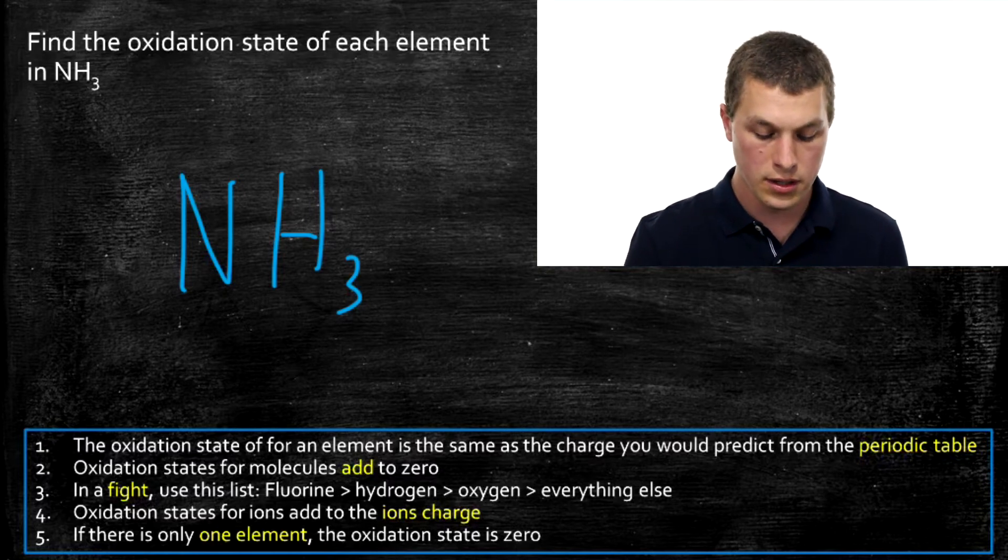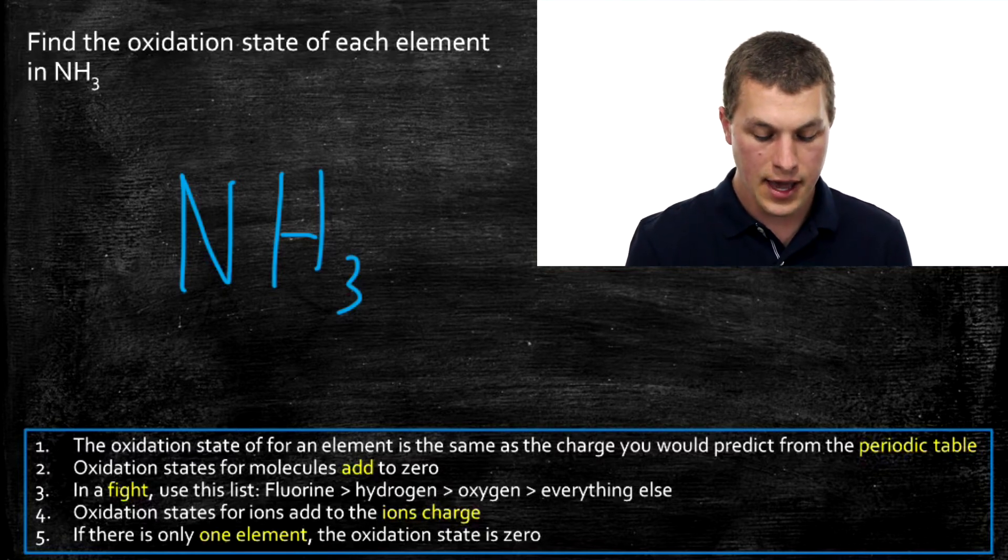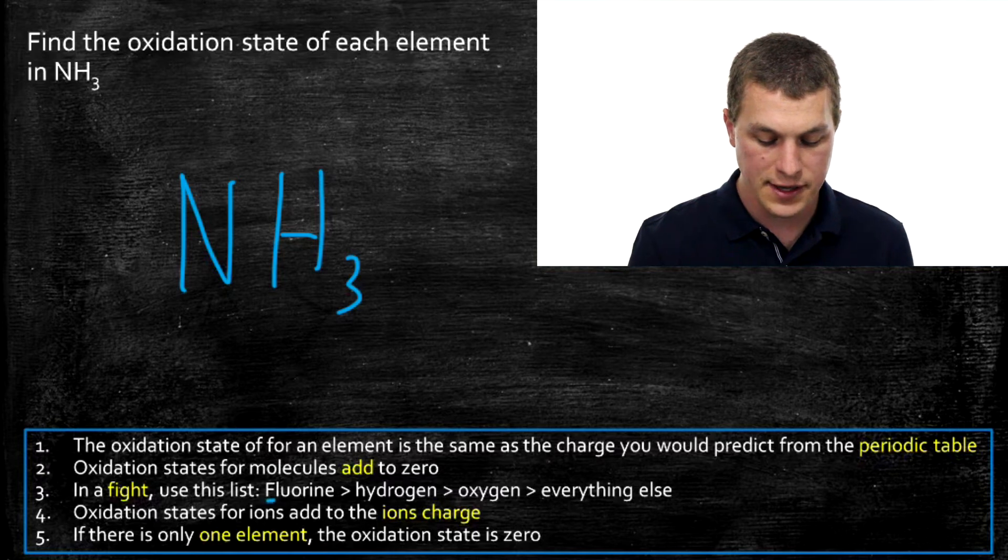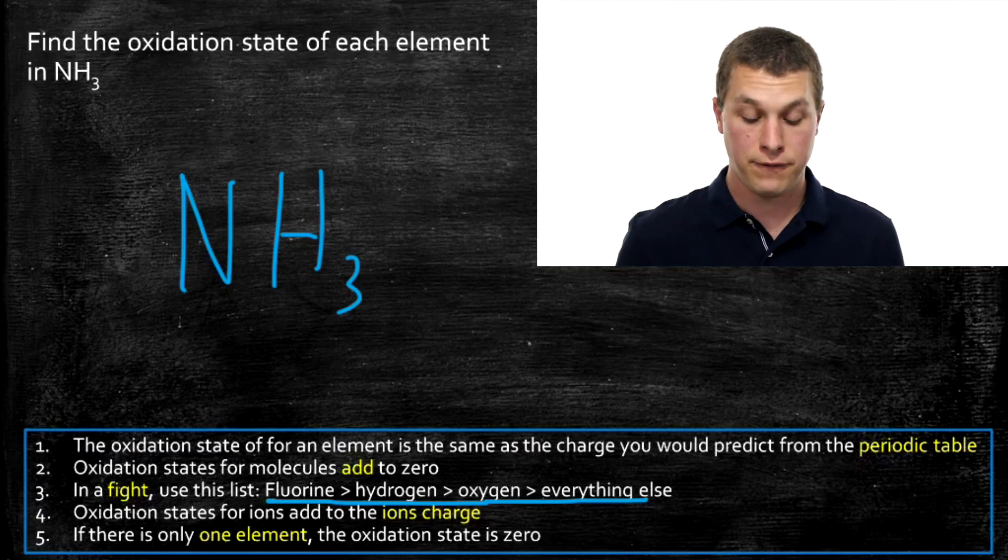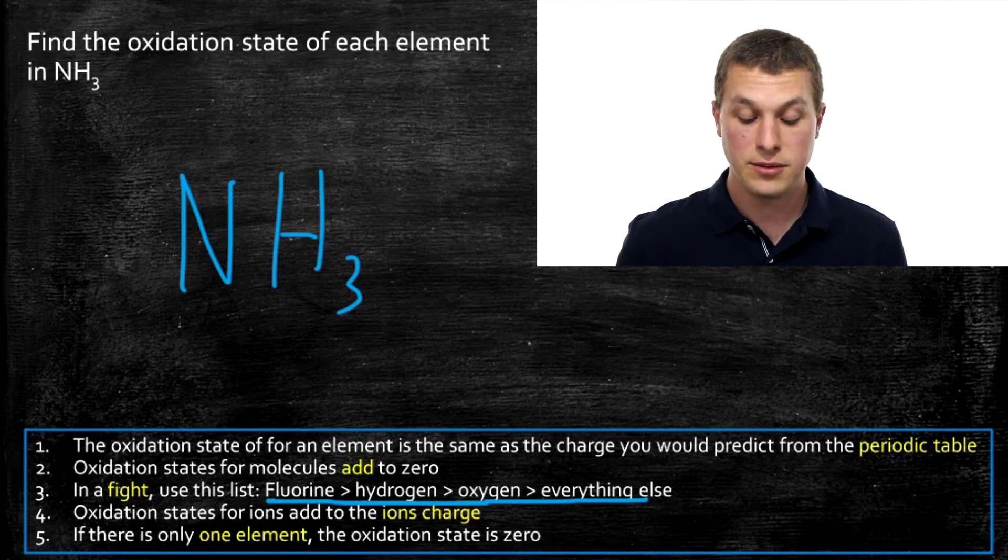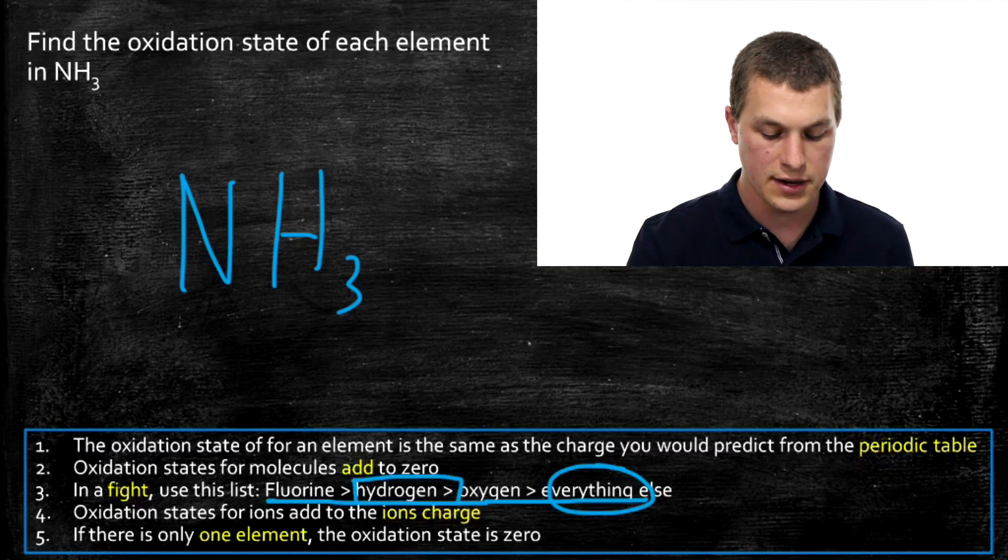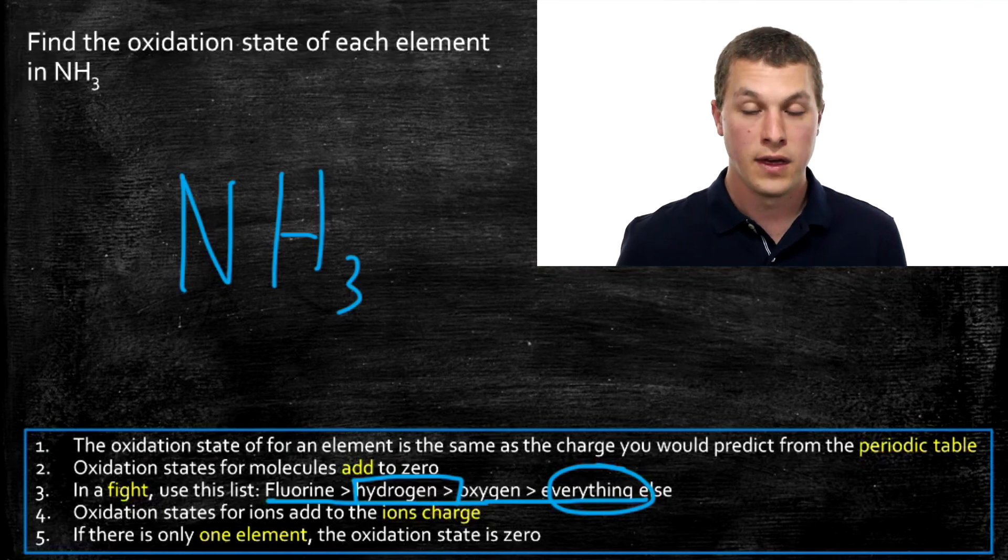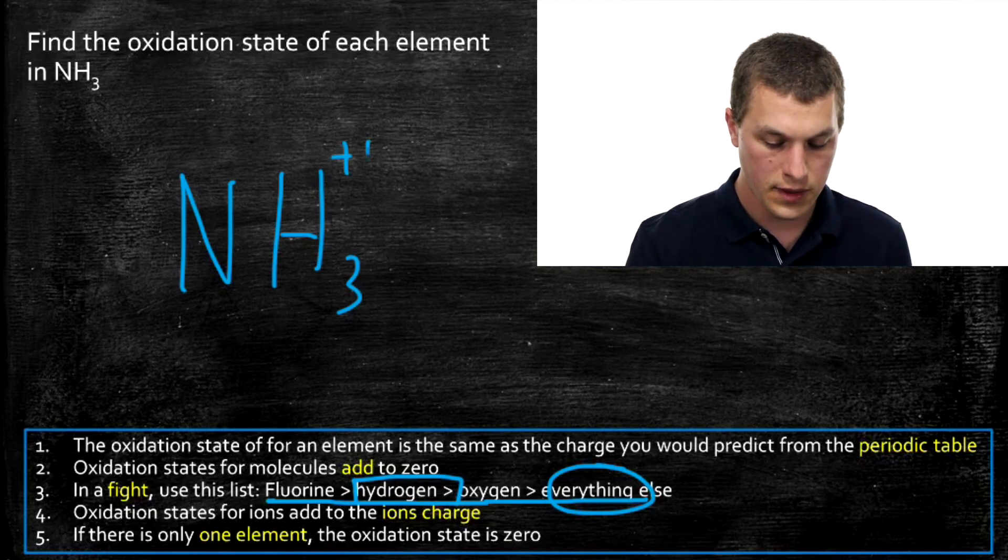I need to look at my list of all my elements and what element wins in each case. This is summarized in rule three. Fluorine always beats hydrogen, which always beats oxygen, which always beats everything else. If I have hydrogen mixed with anything besides fluorine, then hydrogen wins out. In this case, I have hydrogen and nitrogen is down here under everything else. So I'm going to start with my oxidation state of hydrogen. Hydrogen has a charge of plus one from its position on the periodic table, and that tells me its oxidation state in this compound is plus one.